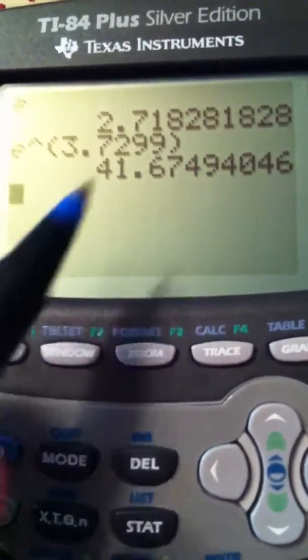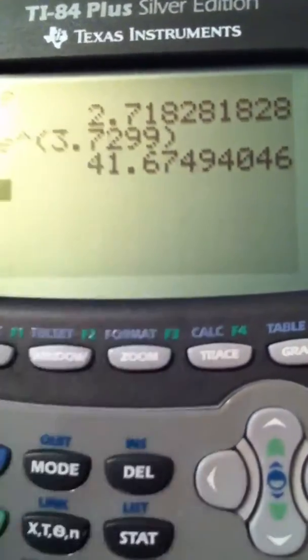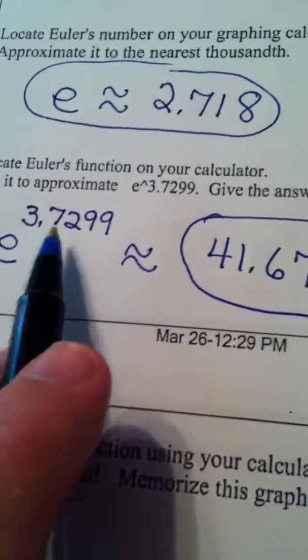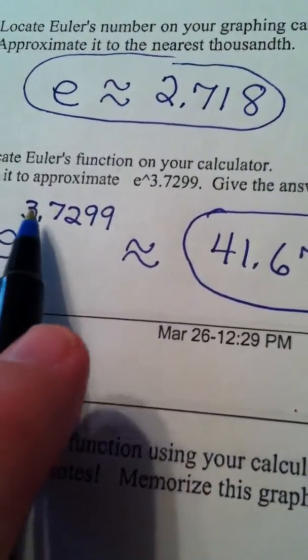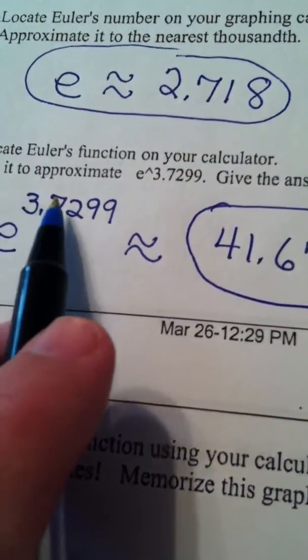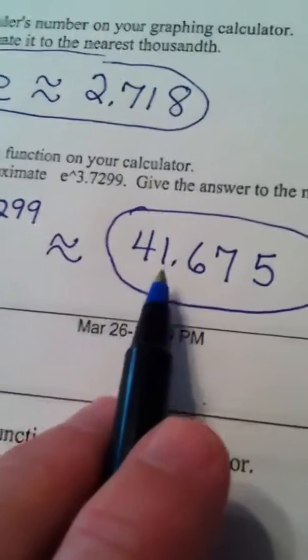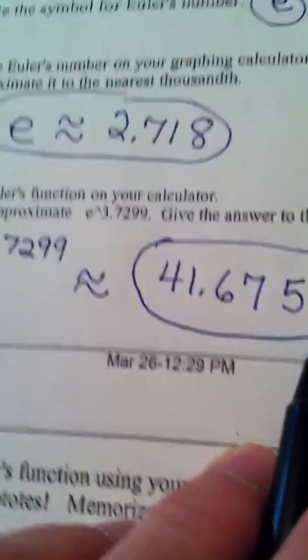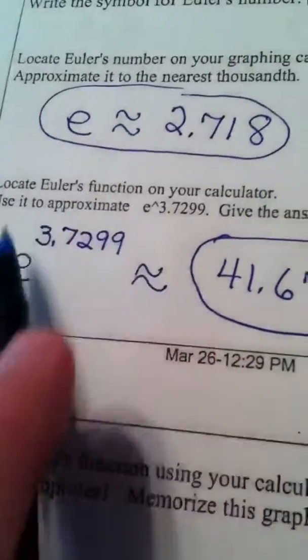And that 4 that you see is going to round up to a 5 because of the 9 that comes after it. So, Euler's number raised to the 3.7299 power is approximately equal to 41.675. And we did that using Euler's function on the calculator.